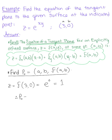So therefore P0, which again is a, b, f of a, b, is defined as 3, 0, 1.